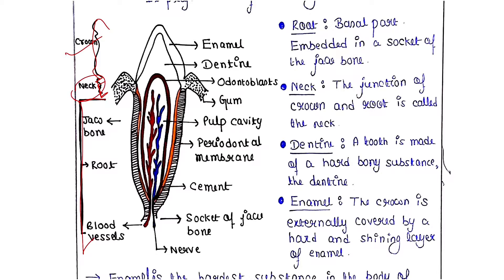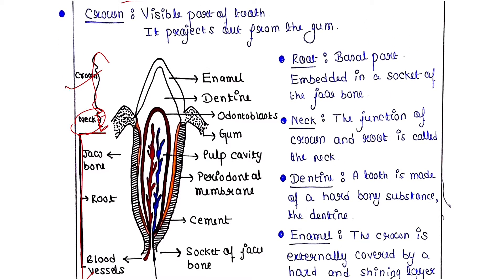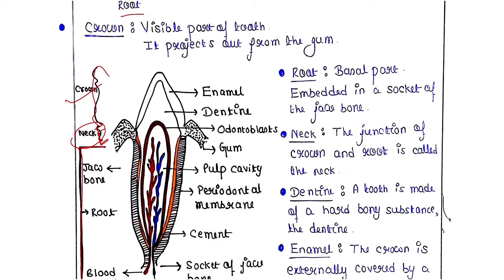The crown is the visible part of the tooth — it projects out from the gum. Whatever part of our tooth we can see from outside is the crown. Only the crown portion of our tooth is visible.